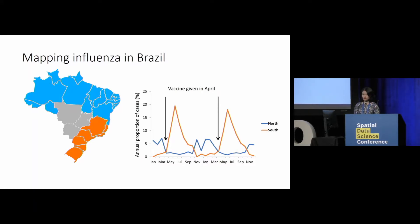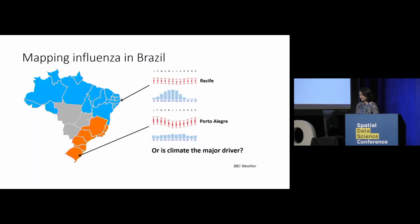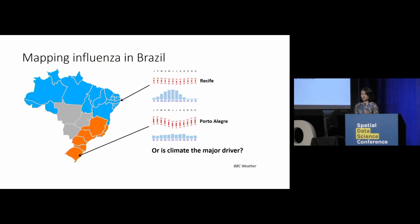Apparently, they gave the vaccine in April, which is perfect for the southern regions because it's at the start of their flu season. However, it will not be very helpful for the northern people because their season has already ended. We're also interested in whether climate is the major driver of this pattern — and it is not only about temperature, it's a mixture of things. In the northern cities, it's always very warm all year round, yet there are cases of flu peaking in late autumn. In the southern cities, the variance of temperature is larger, but the variance of cases is not that big.